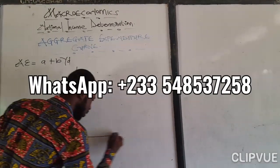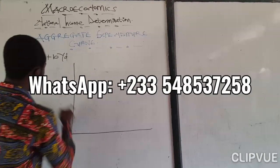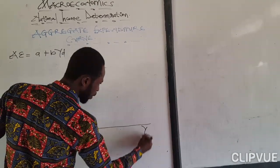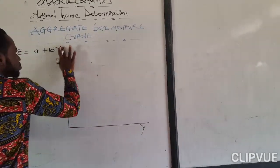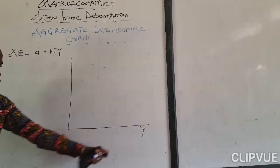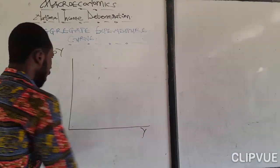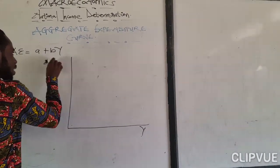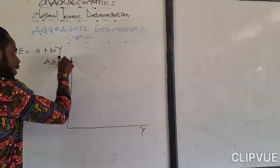So the aggregate expenditure curve is like this. And here is the income or disposable income. So let me use income. It could also be disposable income, but I will use income. So aggregate expenditure and aggregate demand.